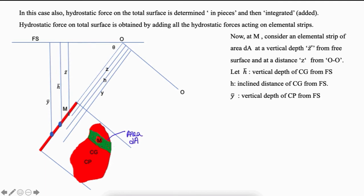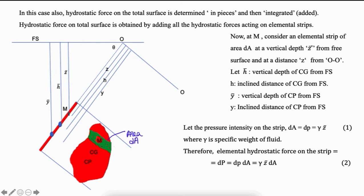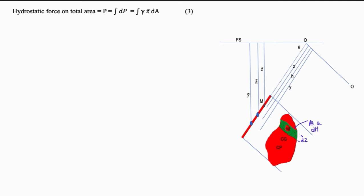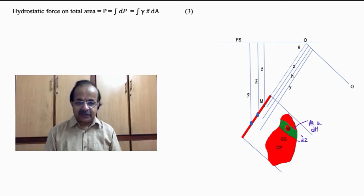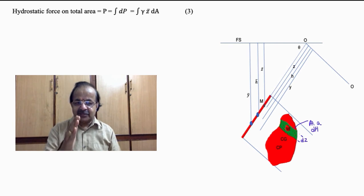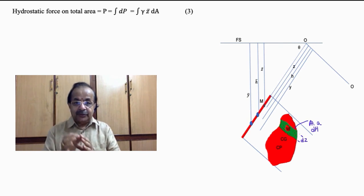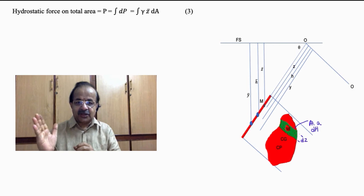Let Y-bar and Y be the vertical depth and inclined distance of the center of pressure measured from the free surface. We know the pressure intensity on the strip dA is dP equals gamma Z-bar. The elemental hydrostatic force on this strip is pressure into area, that is gamma Z-bar dA. Then the hydrostatic force on the total area of the inclined plane surface is capital P equals integral dP equals integral gamma Z-bar dA, as denoted by equation 3.